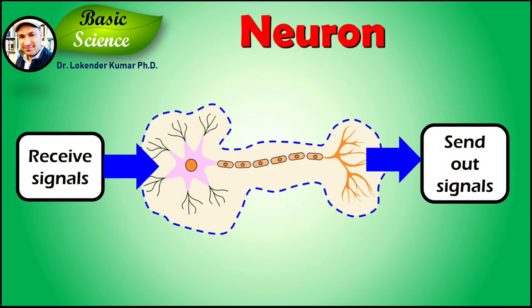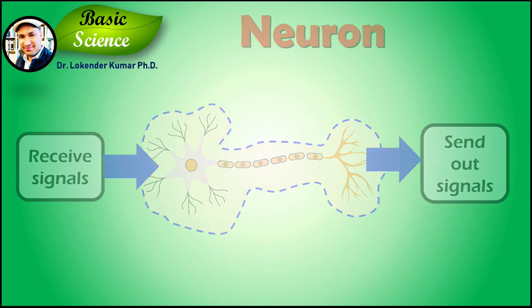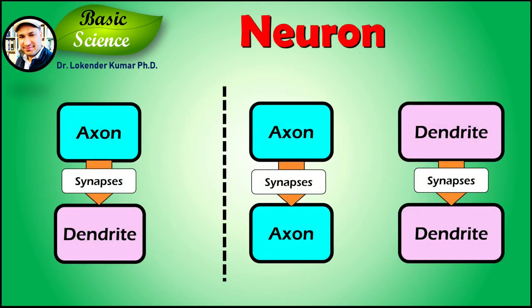The basic function of neurons: most neurons receive signals via the dendrites and soma and send out the signals down the axon. At the majority of synapses, signals cross from the axon of one neuron to a dendrite of another. However, synapses can also connect an axon to another axon or a dendrite to another dendrite.